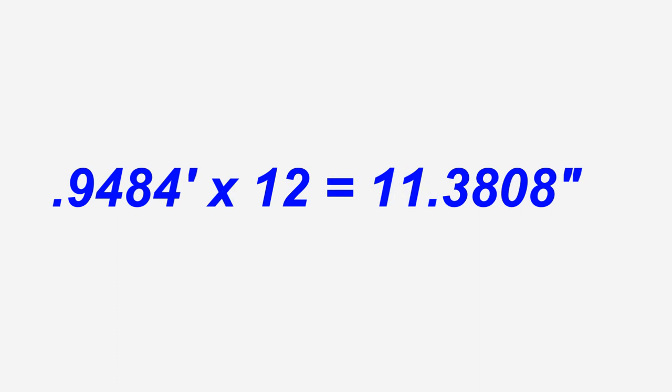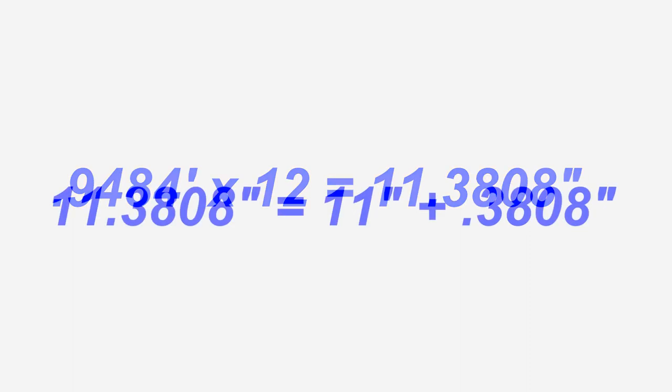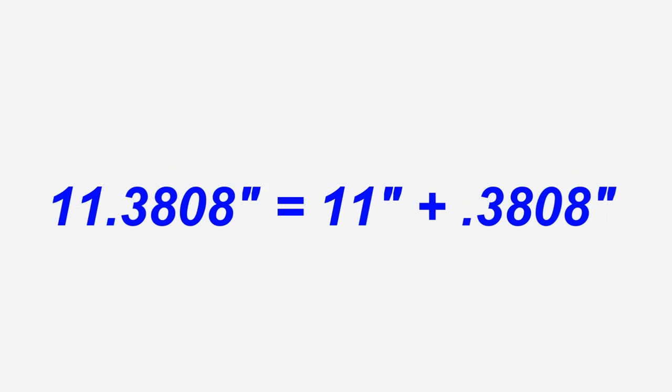Since there are 12 inches in a foot, multiply .9484 feet by 12 to get 11.3808 inches. This lets us know it is 4 feet 11 plus a fraction of .3808 inches.